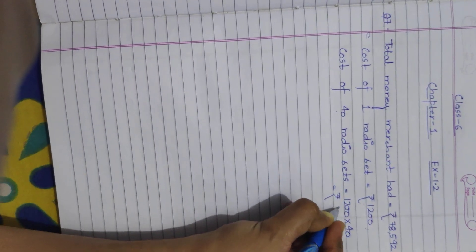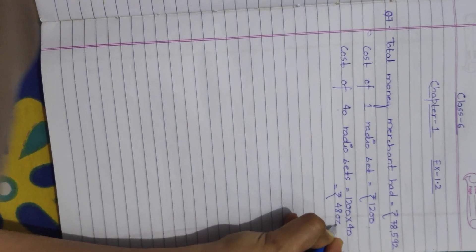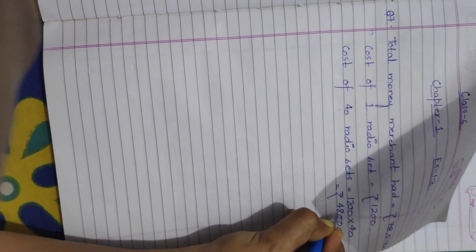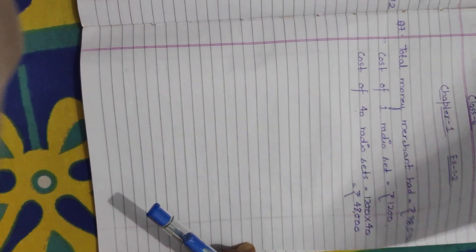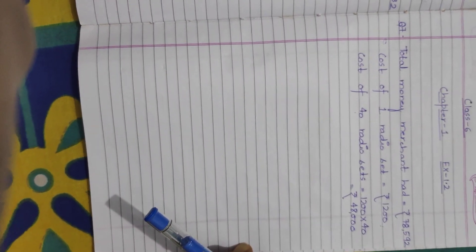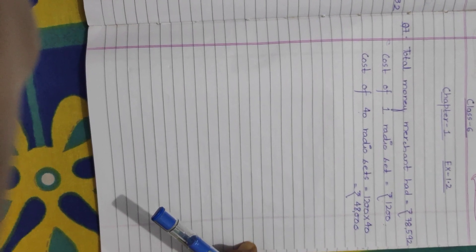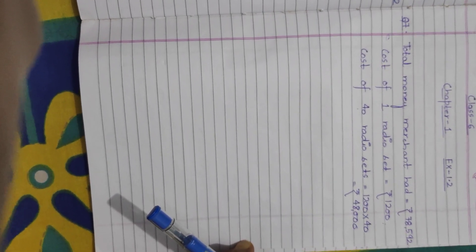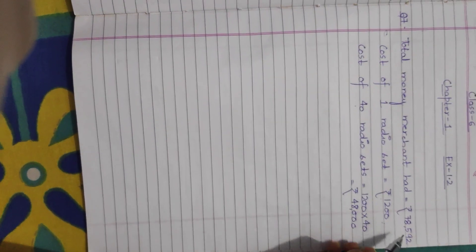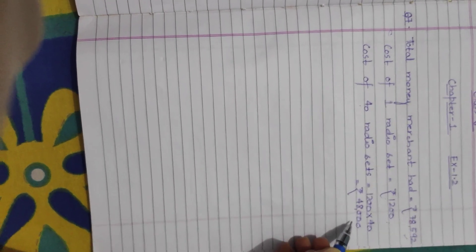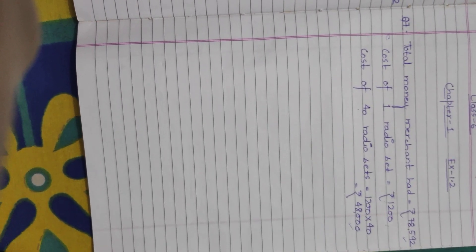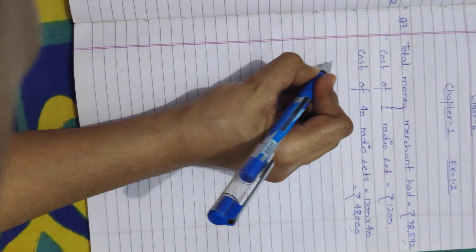1,200 multiplied by 40 gives us 48,000. Now, they are asking how much money will remain with her after the purchase. The total amount the merchant had is 78,592, and 48,000 is required to purchase 40 radio sets. We have to calculate the remaining amount.